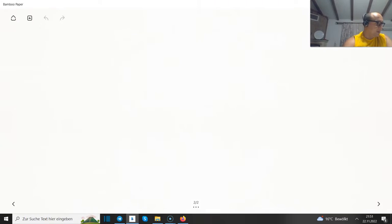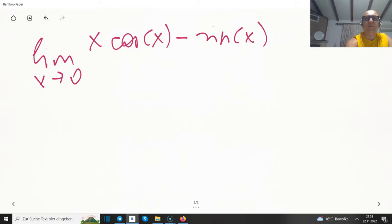Next, let's consider limit x towards 0, x times cosine of x minus sine of x, divided by x³. Alright, so what do we have here? If I put for x 0 in the denominator, we have x as a factor and sine is 0 as well, so they are both 0, so the numerator is 0. x³ is 0 as well.